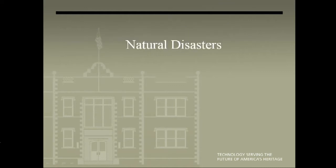A natural disaster is a major adverse event resulting from natural processes of the earth. Examples include floods, drought, hurricanes, tsunami, and other geologic processes. A natural disaster can cause loss of life or property damage and typically leaves economic damage in its wake.